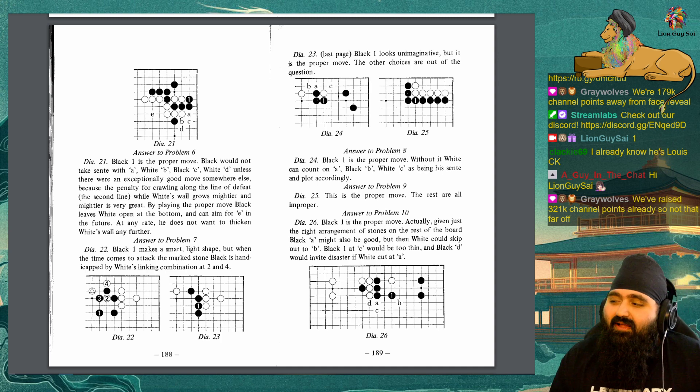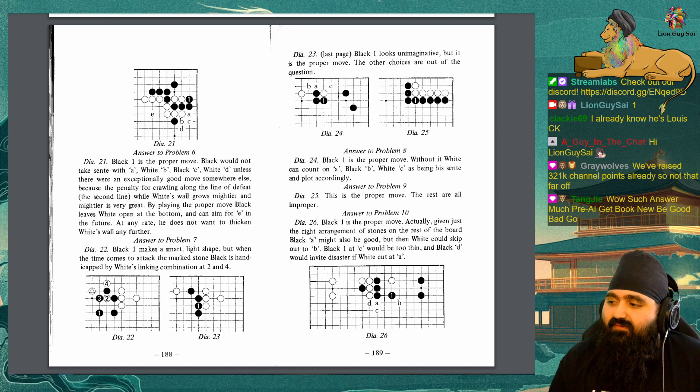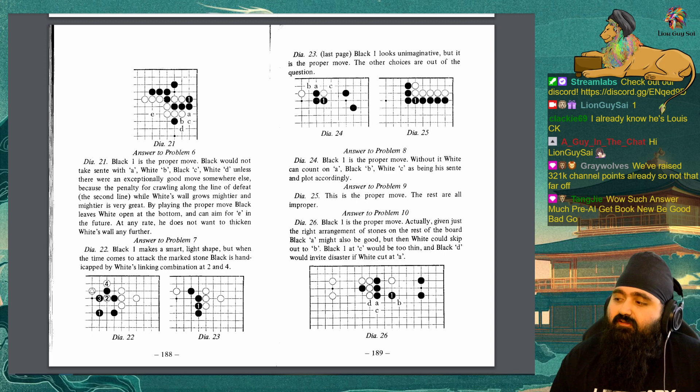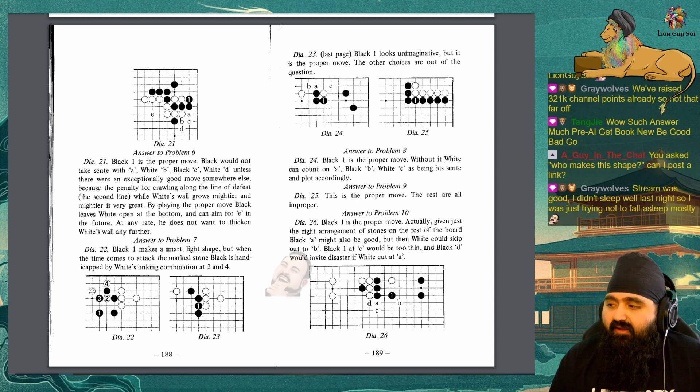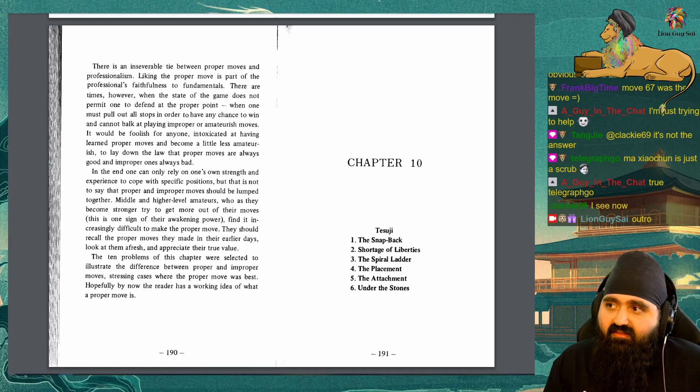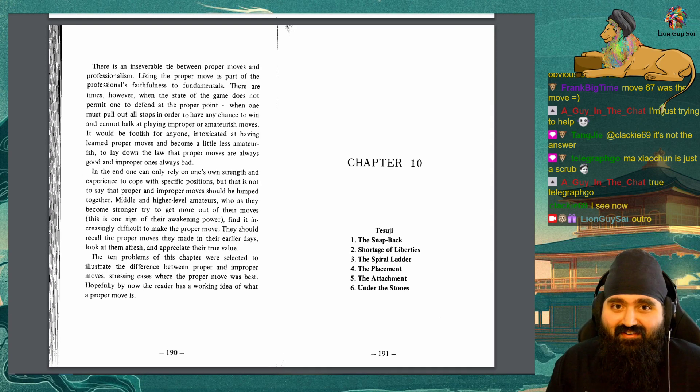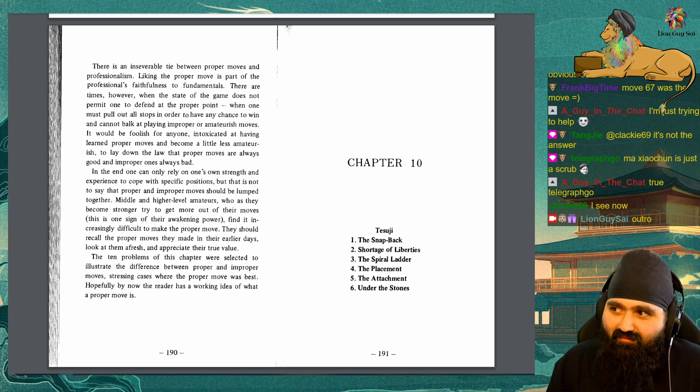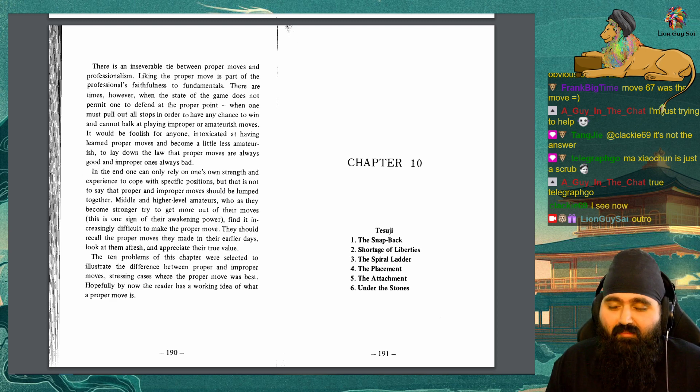Answer to problem 10. Diagram 26. Black 1 is the proper move. Actually, given just the right arrangement of stones on the rest of the board, Black A might also be good, but then White could skip out to B. Black 1 at C would be too thin, and Black D would invite disaster if White cuts at A. There is an inseverable tie between proper moves and professionalism. Liking the proper move is part of a professional's faithfulness to the fundamentals. There are times, however, when the state of a game does not permit one to defend at the proper point. When one must pull out all stops in order to have any chance to win, and cannot balk at playing improper, amateurish moves. It would be foolish for anyone, intoxicated at having learned proper moves and become a little less amateurish, to lay down the law that proper moves are always good, and improper ones are always bad.